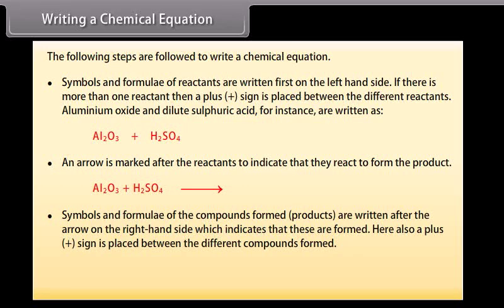Symbols and formulae of the products are written after the arrow on the right-hand side, indicating that these are formed. A plus sign is placed between different compounds formed. For example: Al2O3 + 3H2SO4 gives Al2(SO4)3 + 3H2O.